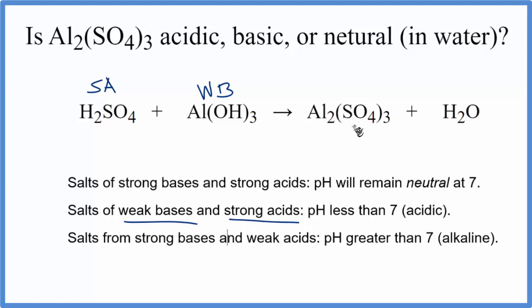That means that this Al₂(SO₄)₃, when it's in that water, the pH is going to be less than 7. It's going to be acidic.